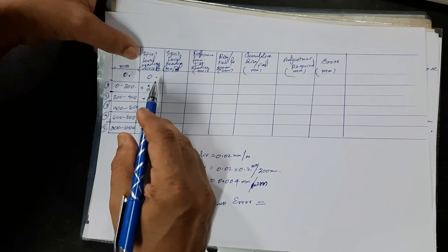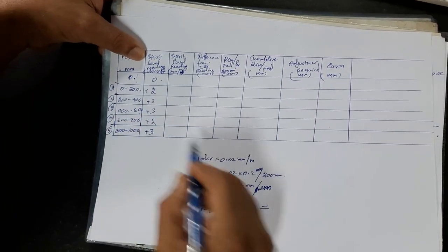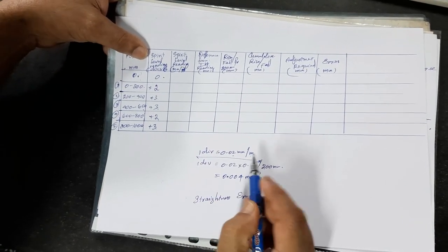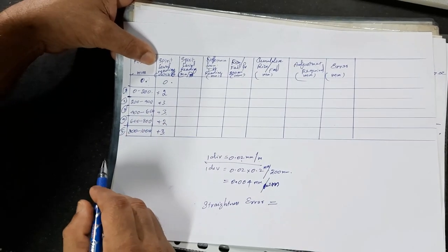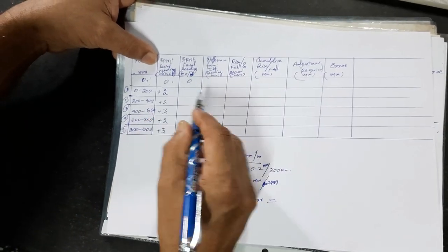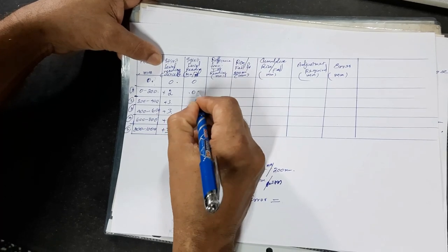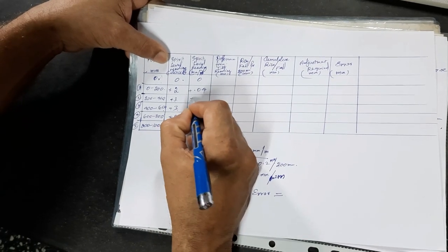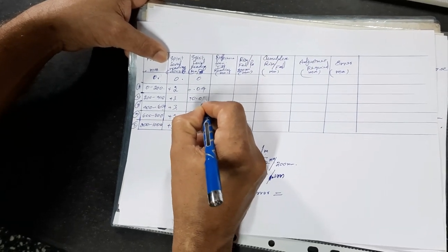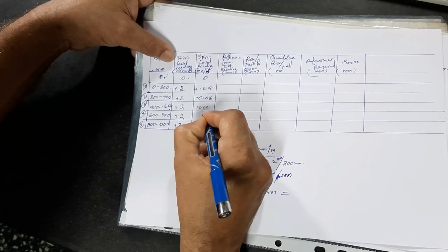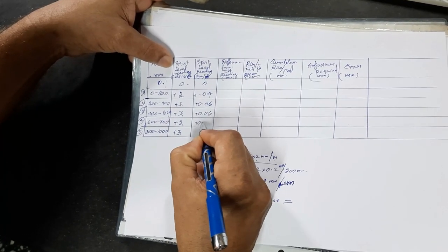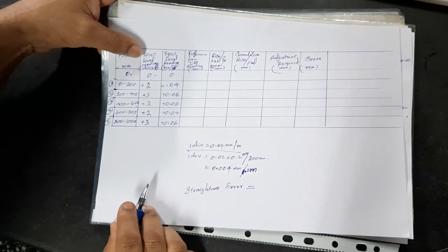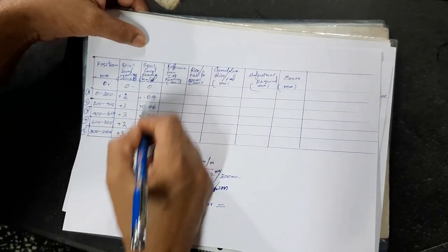Now, converting these division readings into mm: one division on the spirit level is 0.02 mm per meter, so you multiply by 0.02. The spirit level readings become: 0, 0.04, 0.04, 0.04, 0.04, 0.06 mm. These are the spirit level readings at each position.